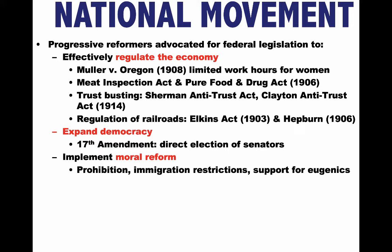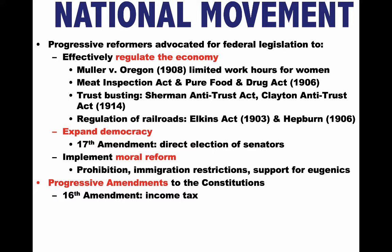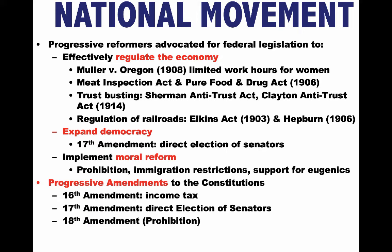During this period, there were amendments added to the Constitution that had the support of Progressive Reformers. The Sixteenth Amendment provided for an income tax. The Seventeenth Amendment provided for the direct election of senators. The Eighteenth Amendment was prohibition. And finally, the Nineteenth Amendment granted women the right to vote.